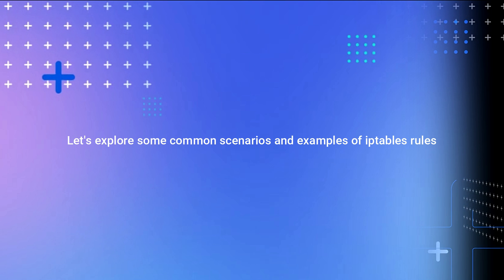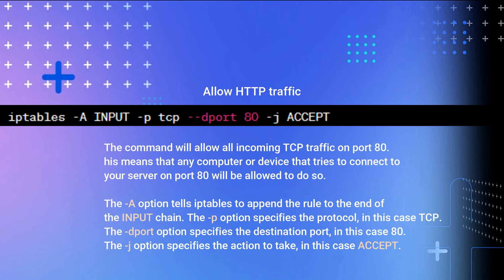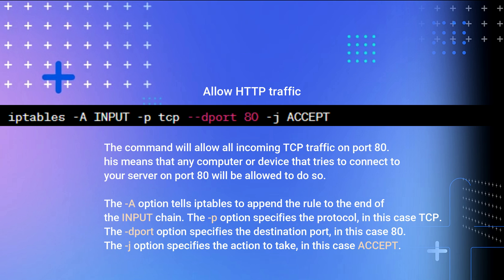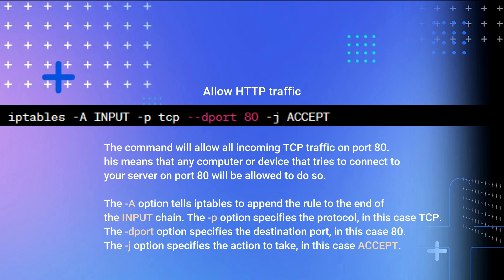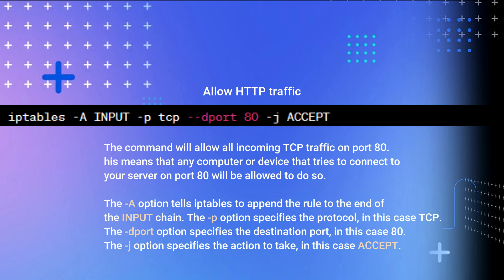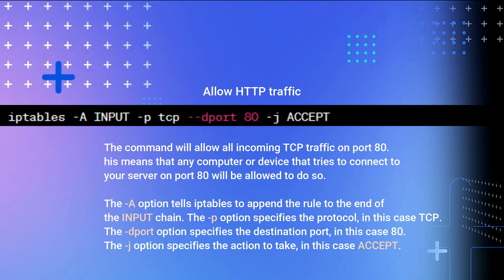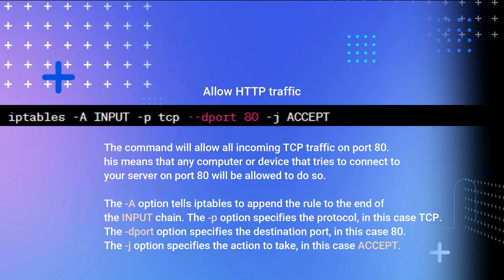Common IP Tables Rule Examples. Let's explore some common scenarios and examples of IP Tables rules. Allow HTTP traffic: this command allows all incoming TCP traffic on port 80, meaning any computer or device trying to connect to your server on port 80 will be allowed to do so. The -A option appends the rule to the input chain, -p specifies TCP, --dport specifies port 80, and -j ACCEPT specifies the action.